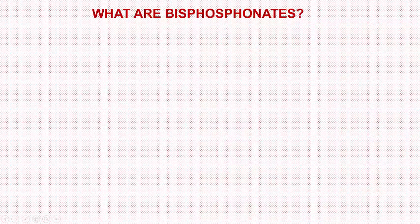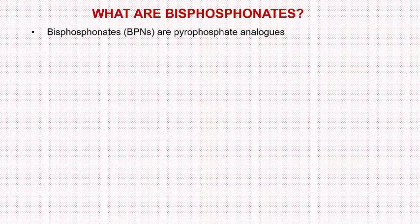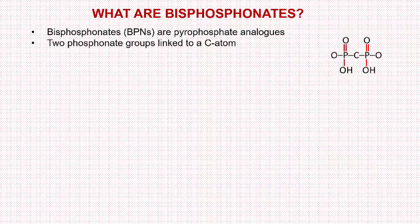In this video we will talk about bisphosphonates. Bisphosphonates are pyrophosphate analogues. As the name suggests, 'bis' means two, and phosphonates are the phosphonate groups, so there are two phosphonate groups linked to each other by a carbon atom.